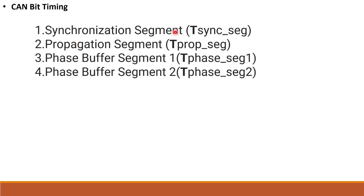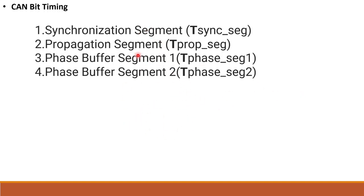The synchronization segment is used in CAN Bit Timing. The propagation segment is also used in CAN Bit Timing. For example, when we transmit data, this is the propagation delay or length delay.